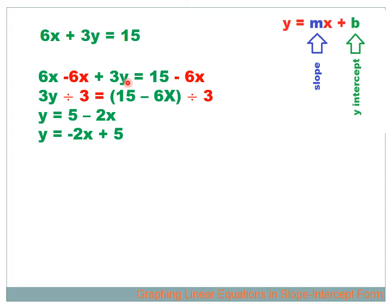If I want to get rid of a times 3, I divide by 3 — both sides of the equation. I have to divide the entire right side, both elements: 15 minus 6x. I can't just divide the 15 or just the 6 by 3 — I divide both by 3. So 3y divided by 3 gives y; 15 divided by 3 gives 5; minus 6x divided by 3 gives minus 2x. The equation reads y equals 5 minus 2x — that's slope-intercept form.